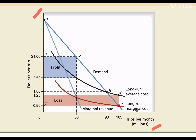This firm has the capability of supplying the entire market demand. When price equals marginal cost at 105 trips per month, average cost is still falling — from $1.25 to something even lower. This firm is capable of supplying the entire market demand alone; we don't need another firm, because two firms would have much higher average costs than a single monopoly. That is why it is called a natural monopoly.